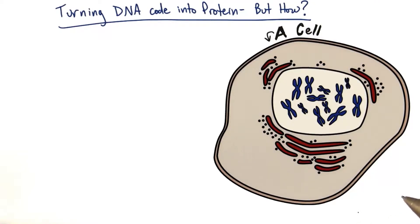So the big question at this point is how is this DNA code like a recipe, and how is it turned into protein actually, technically?